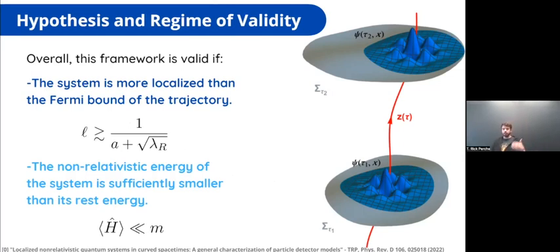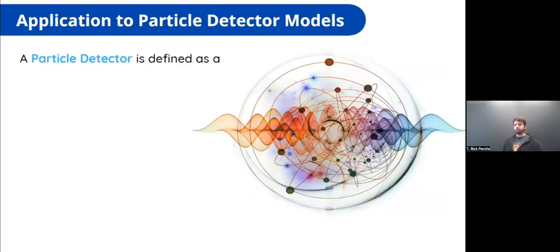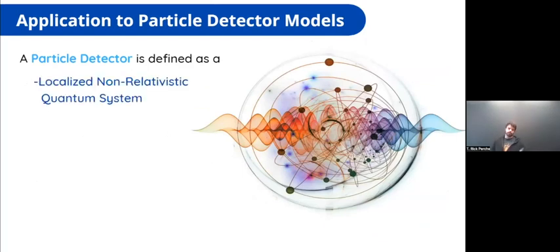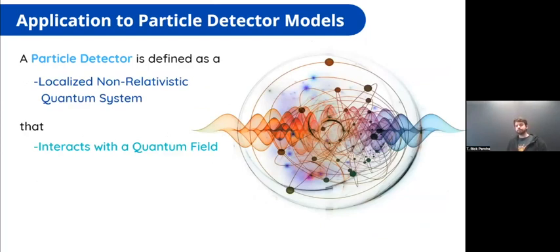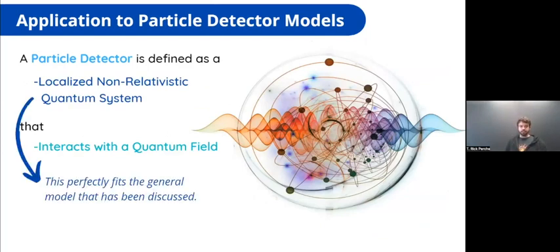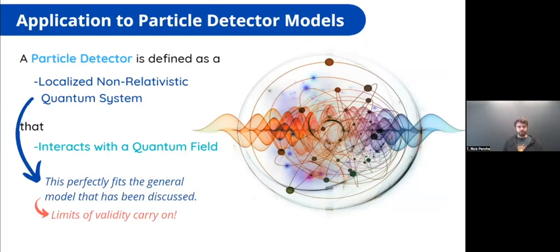Now the idea is to use this in order to build a general notion of particle detector models. A particle detector is essentially this localized non-relativistic quantum system, but now it also interacts with a quantum field. The limits of validity and everything else carry over to these particle detectors. The other thing we need to prescribe is how this detector interacts with a quantum field.